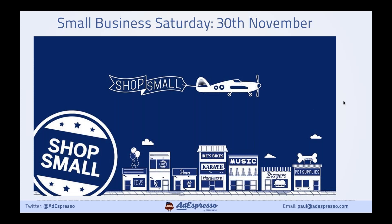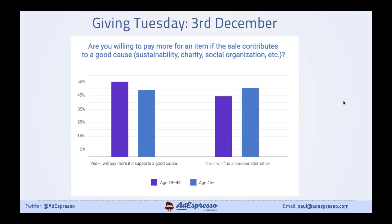Then there's Giving Tuesday — the day after Cyber Monday. This is where you can put a different angle on your ads. After relentlessly showing 'buy, buy, buy' ads over the weekend, show your social side — if you support a charity or your staff do voluntary work, this is the time to change some ads. Data from Tenuity shows people in the 18–44 age group generally pay more when there's a good cause involved. It's worth incorporating into your ads on Giving Tuesday.